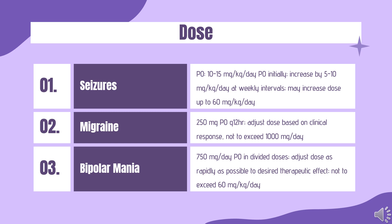Simple and Complex Absence Seizures: Also indicated for use as sole and adjunctive therapy in the treatment of simple and complex absence seizures, and adjunctively in patients with multiple seizure types that include absence seizures. IV: Valproate sodium 10–15 mg/kg/day divided Q12H, infused over 1 hour; maximum dose 60 mg/kg/day; do not exceed 14 days; switch to PO as soon as possible.